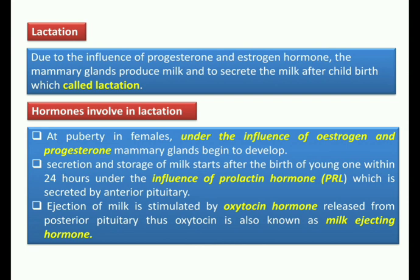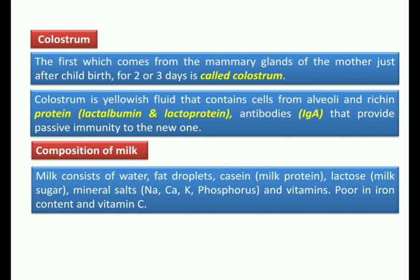To summarize the role of different hormones: estrogen and progesterone help in development of the mammary gland. Under the influence of prolactin hormone, secretion and storage of milk occurs after the birth of the young one within 24 hours. Finally, release of milk is stimulated by oxytocin hormone, which is secreted from the posterior part of the pituitary.